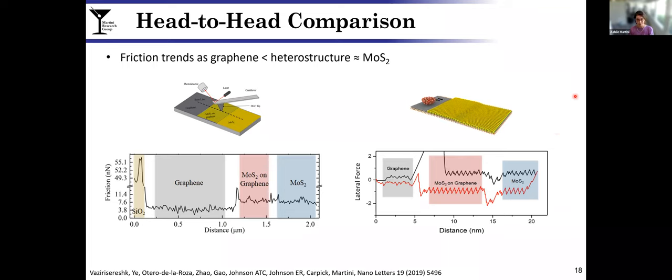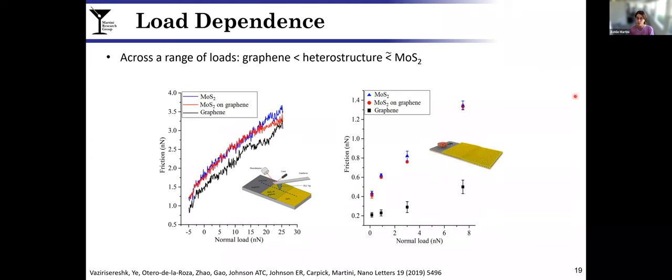To confirm this difference, we performed the simulations and experiments - experiments on the left, simulations on the right - at different normal loads. What you can see is consistently the friction of the MoS2 is higher than the friction on the graphene. The graphene is in black here. Also in some of the cases we see the heterostructure, that's in red, has lower friction than the MoS2 directly on the substrate.